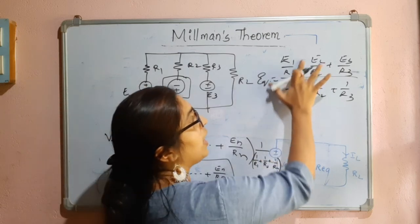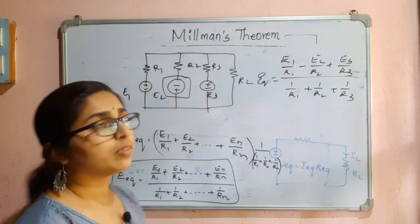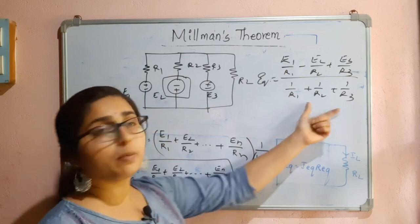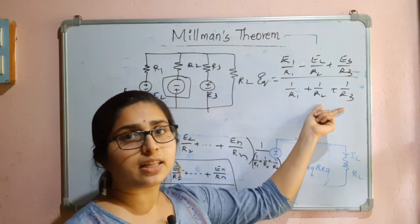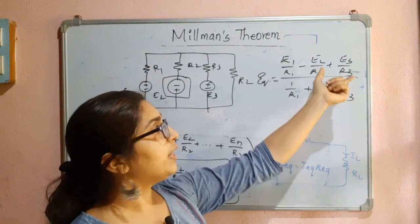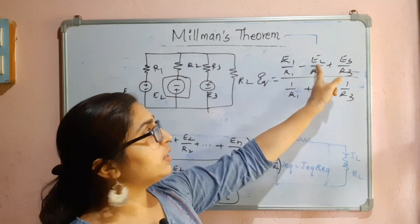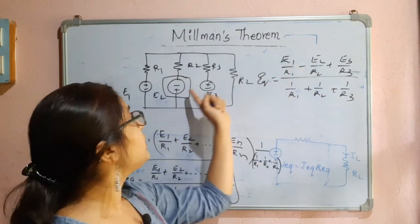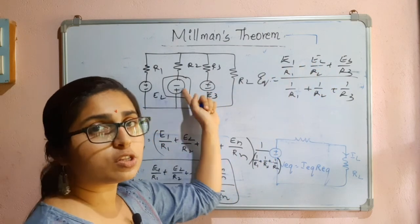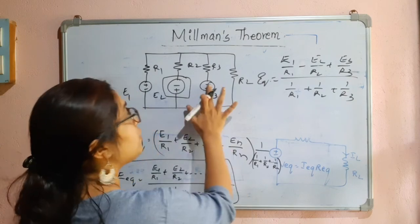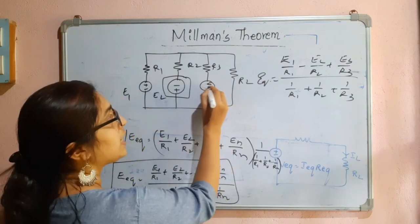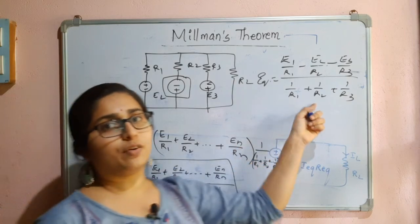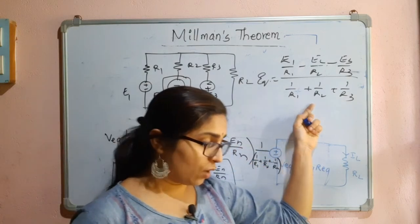When a voltage source has an opposite polarity, you must take its contribution as negative — for example, minus E1/R1 or minus E2/R2. The resistance part does not change, but the sign of the voltage term in the numerator is affected by the polarity. So if a source is reversed, write it as a negative term. Always take care of the sign — it depends on the polarity of the voltage source.